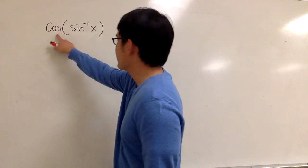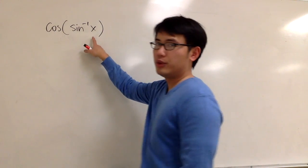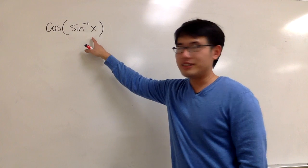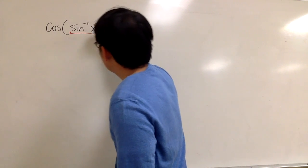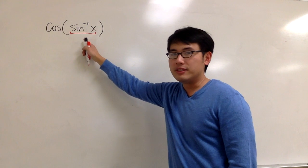Let's see how we can change cosine of inverse sine x into an algebraic expression. First thing, we have to notice that this part right here, for any inverse trig function, represents an angle.